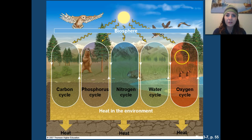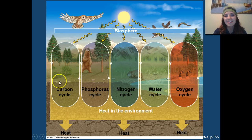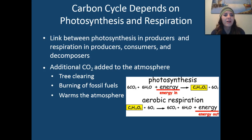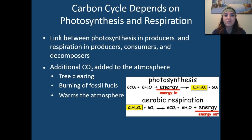The next cycle we're going to look at is the carbon cycle. The carbon cycle depends very deeply on photosynthesis and respiration. The link between photosynthesis and producers, as well as respiration from producers, consumers, and decomposers, drastically affects the carbon cycle — it's all about the cycling of carbon in our world.